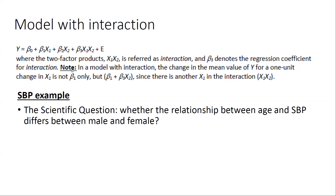Please pay attention: in this model with interaction, the change in the mean value of Y for one unit change in X1 is not beta 1 only. You basically need to consider two situations. If X2 takes the reference group, meaning X2 equal to 0, then beta 1 is really the difference in Y for one unit change of main exposure X1. But if X2 takes the higher level, meaning X2 equal to 1, the difference in the expected value of Y would be beta 1 plus beta 3 times X2, since there is another X1 in the interaction term X1 times X2.